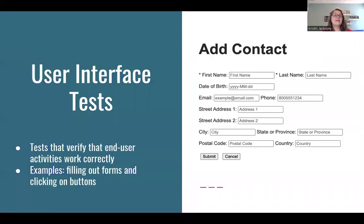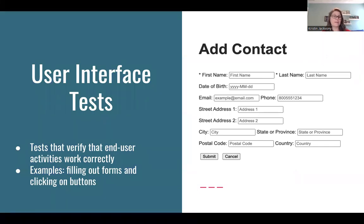Then we have user interface tests, also known as UI tests. These are the kinds of tests that most people think of when they think about test automation. They verify that end user activities are working correctly — for example, filling out forms and clicking on buttons.